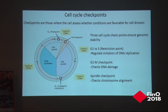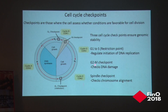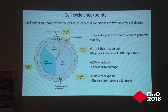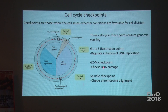This restriction point is very important where the cell checks that all components of DNA replication are present and the DNA is not damaged. Another checkpoint is the G2/M checkpoint, which checks for DNA damage before entering mitosis. When therapeutic agents or DNA damaging agents are given, cells get arrested in G2/M phase, which is visible on flow cytometry as a large population of cells arrested at that point. If the DNA is damaged, the cell will not allow mitosis to proceed.